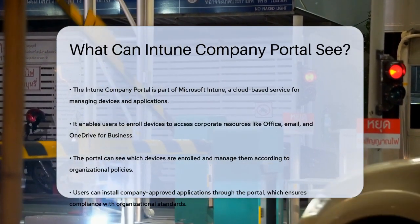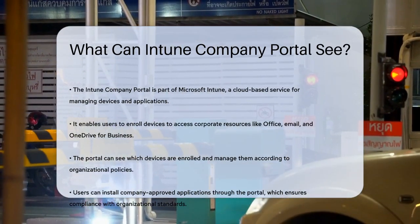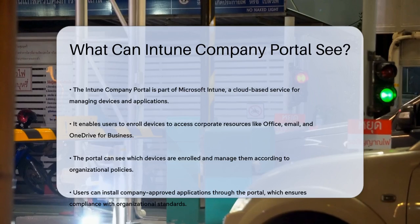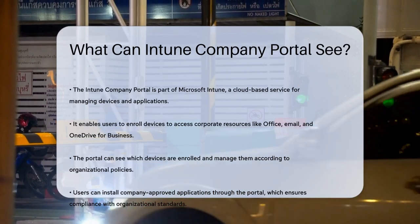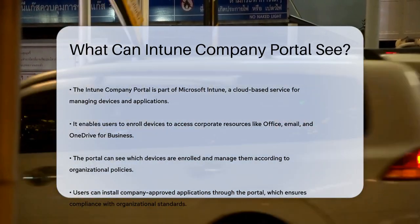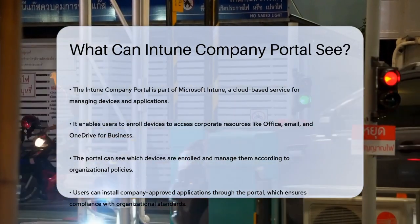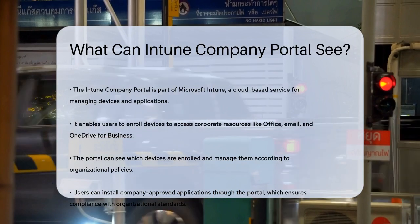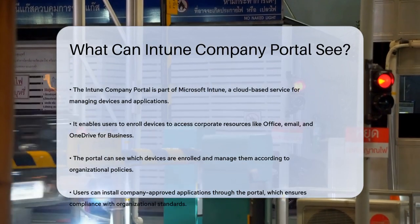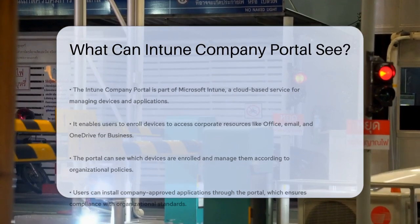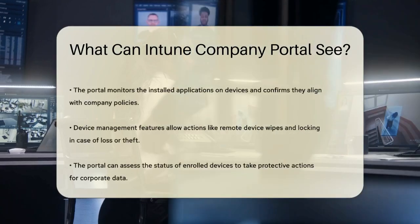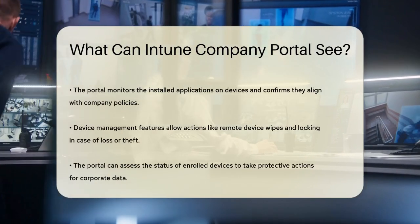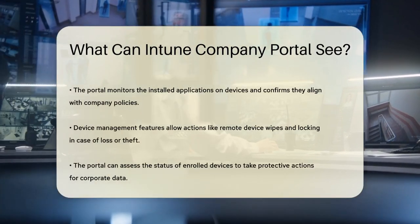Here's what the Intune Company Portal can see and do. First, it allows you to enroll your device to access corporate resources such as Office, Email, and OneDrive for Business. This means the Portal can see which devices are enrolled and manage them according to your organization's policies.